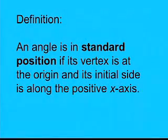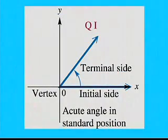Let's take a look at an angle in standard position, which means that its vertex is at the origin, and its initial side is along the positive x-axis. So here we have an example of an angle. You can see the initial side along the positive x-axis, and the terminal side, in this case, falls in what's called quadrant 1. This is called an acute angle because it's an angle that's between 0 and 90 degrees.